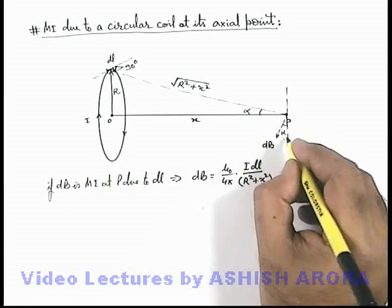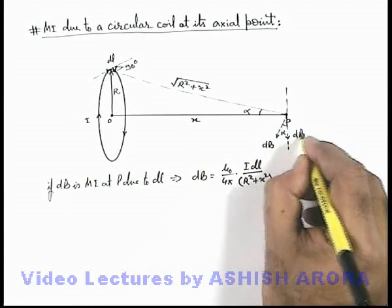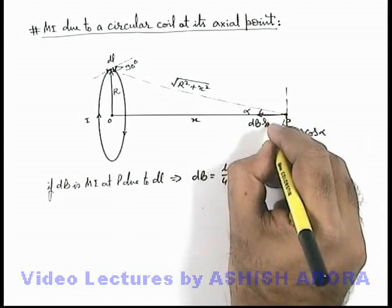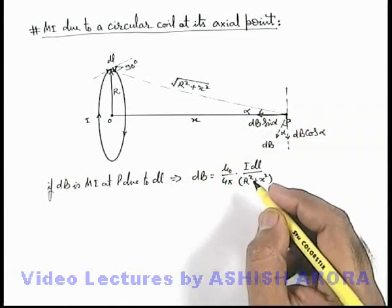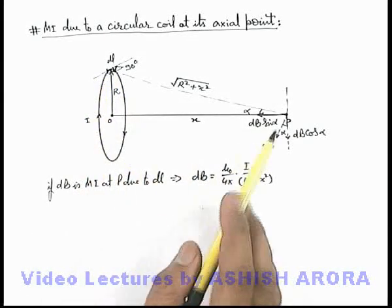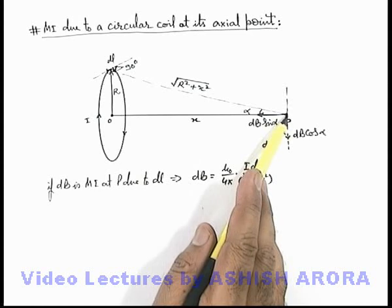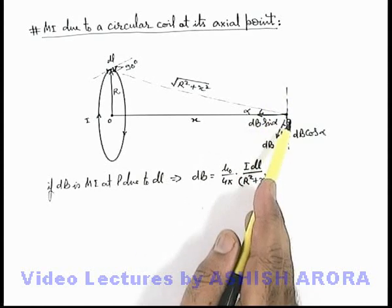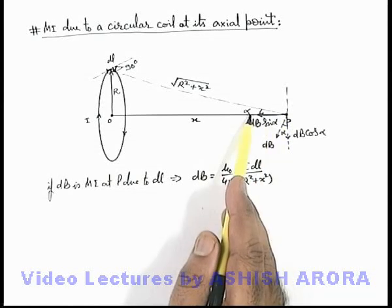And here this db will have two components: one is db cos alpha and the other one is along the axis which is db sine alpha. Due to all the elements on the circular coil, if we calculate the direction of db as well as its magnitude, this db cos alpha will all get cancelled out and db sine alpha will be added up.